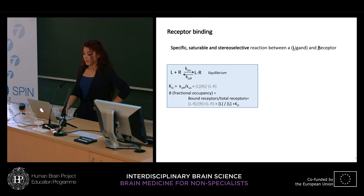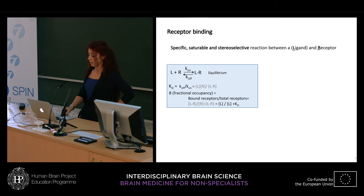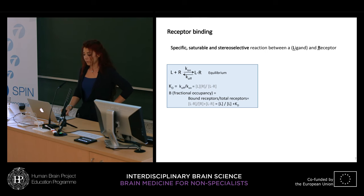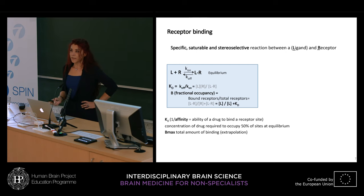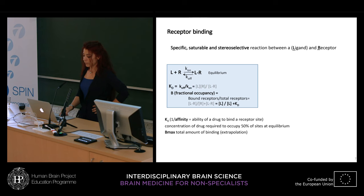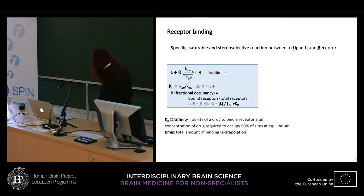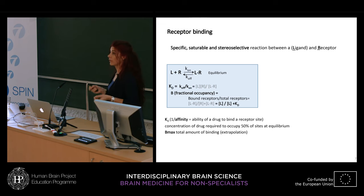Important parameters in the reaction are the KD, the dissociation constant — the ratio of K-off to K-on — and the fractional occupancy, which is the amount of bound receptor relative to total receptors present. In lay terms, the KD is the inverse of affinity: affinity is the ability of a drug to bind a receptor site, defined as the concentration of drug required to occupy 50% of the sites at equilibrium.